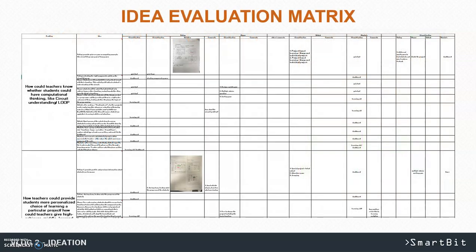One of the interesting improvisations we did in this stage was to build a spreadsheet which we named the Idea Evaluation Matrix. It showed all of our ideas generated through group brainstorming under one file, which we then compared and amended.